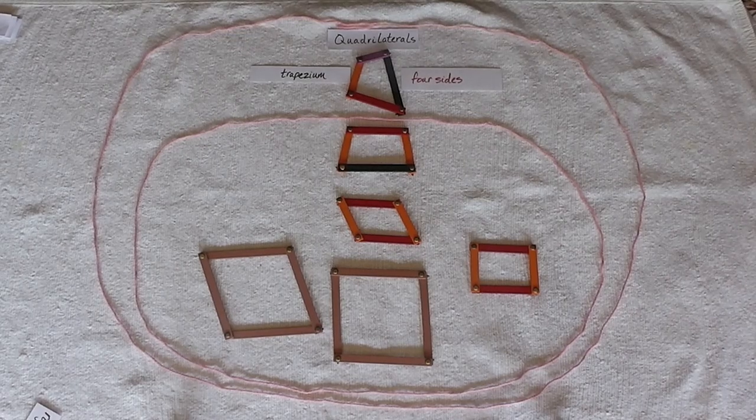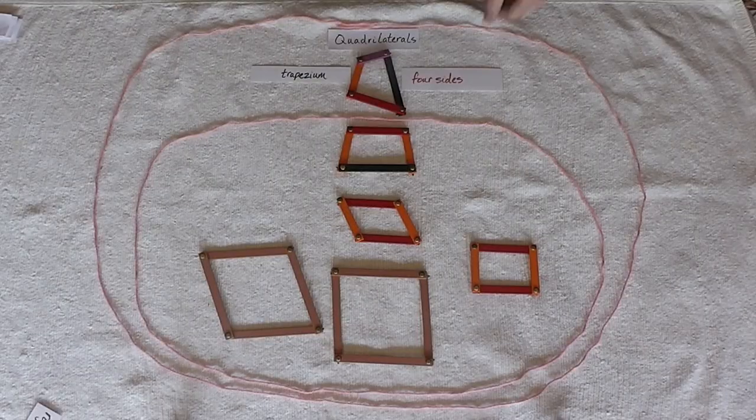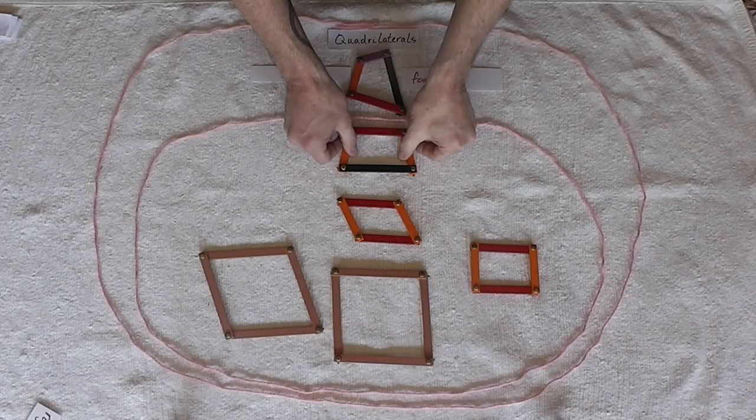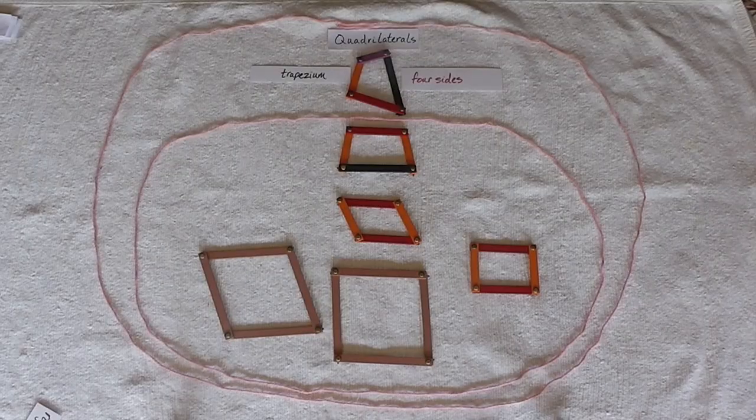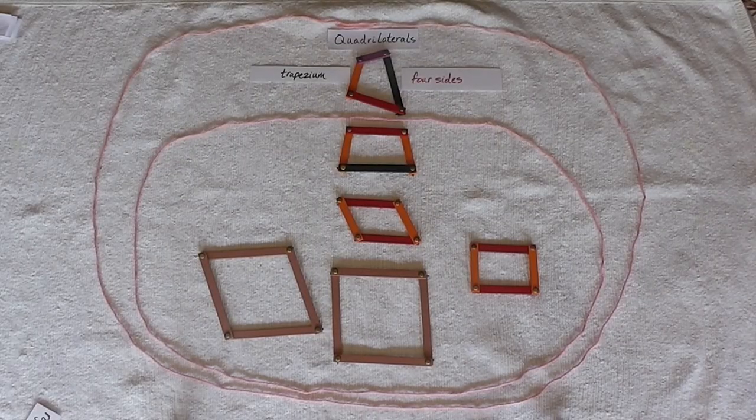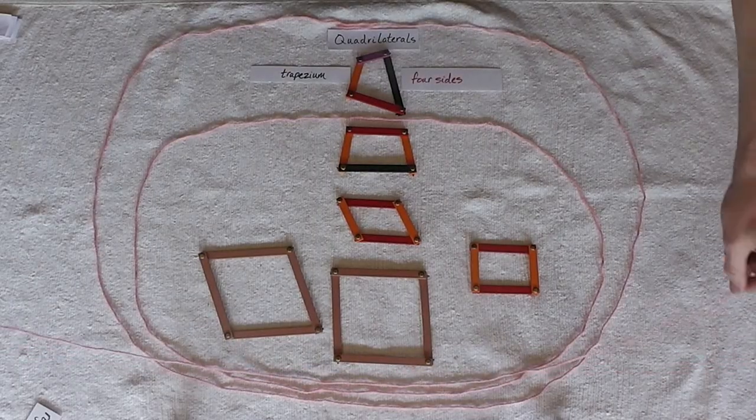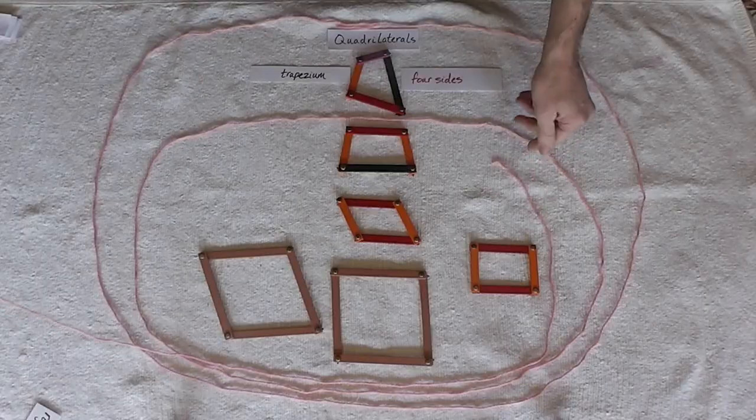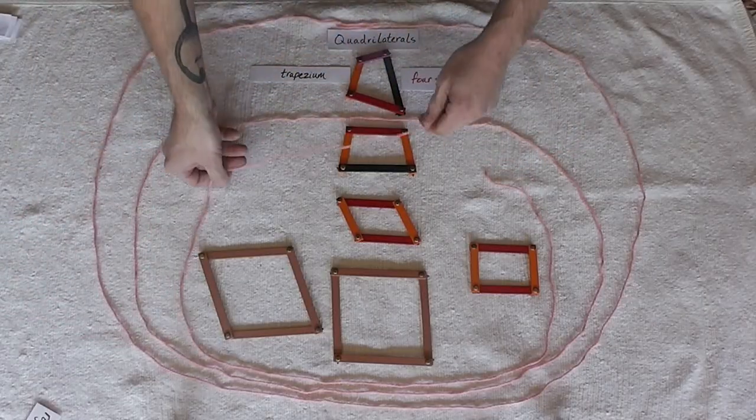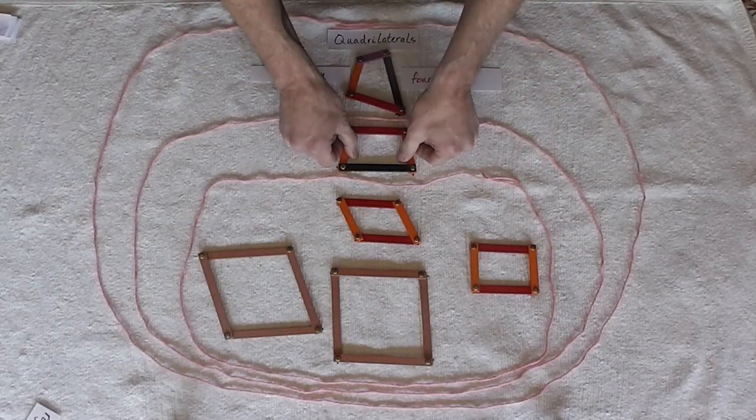So I'm going to just fix that and I'm going to put down another piece of yarn. And I'm going to exclude the trapezoid. There we go. Trapezoid is no longer in this circle.